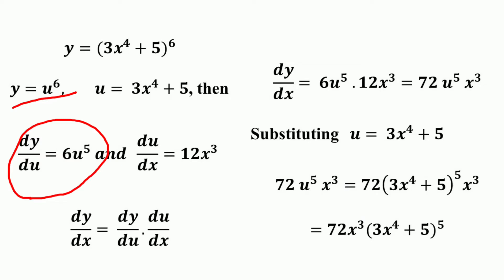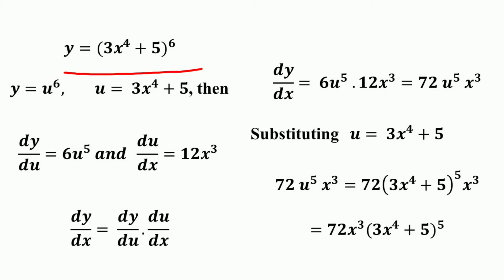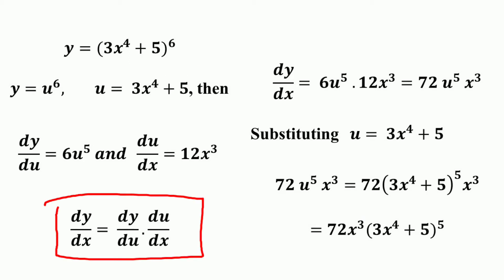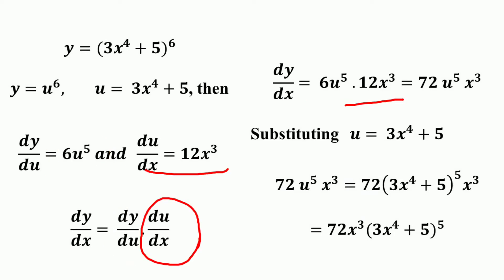So dy/du is equal to the derivative of u⁶, which is equal to 6u⁵, where u equals 3x⁴ + 5. And by taking the derivative of u with respect to x, that is du/dx, which is equal to 12x³. So the derivative of the given function y = (3x⁴ + 5)⁶ is equal to dy/du multiplied by du/dx, giving us 6u⁵ into 12x³.